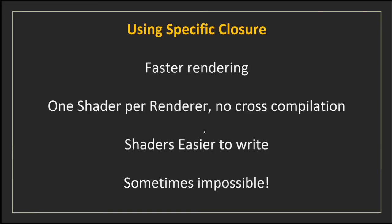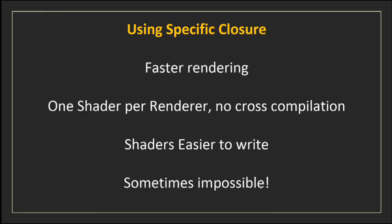For me, using specific closures — you spend a lot of time in documentation, a lot of tests — but it's the best result. It's also faster, because the shaders are smaller and easier to write once you've done all your tests. Indeed, it's sometimes impossible. For example, if you want to make subsurface scattering with AppleSeed, it's just not possible. And if you want to make volume with V-Ray, V-Ray is not making volume with OSL. But it's not a big problem, because when you choose your renderer, you choose it for one reason. The goal is not to have exactly the same picture — it's to take advantage of each renderer.